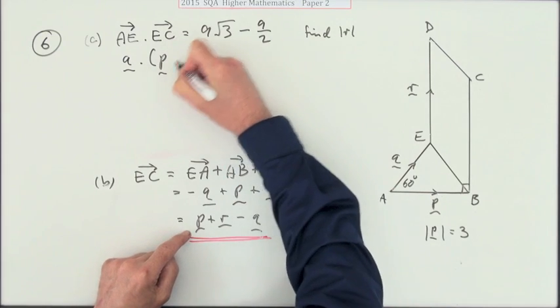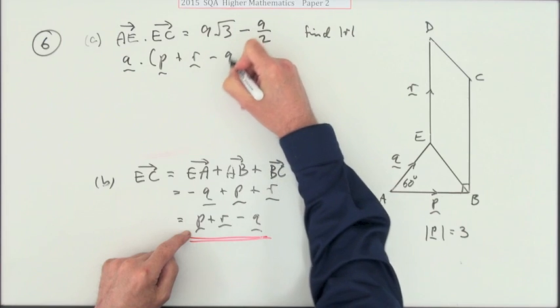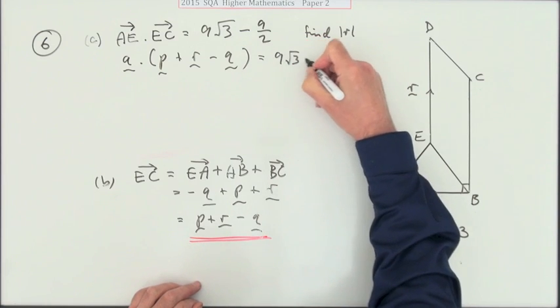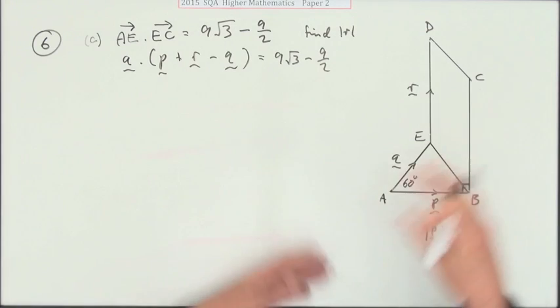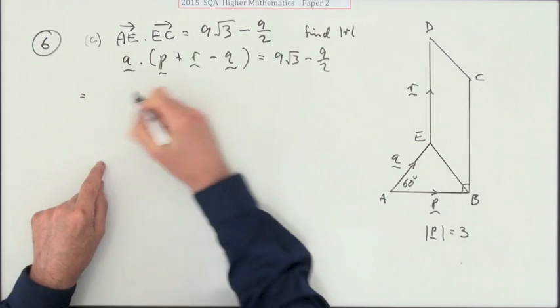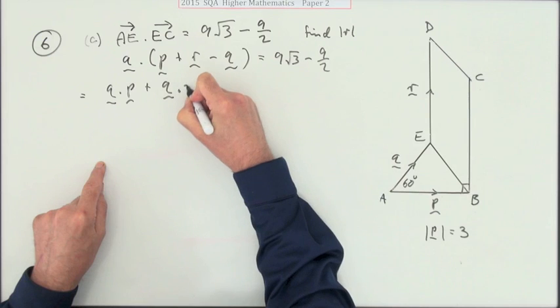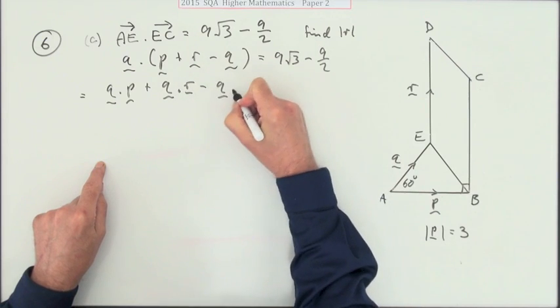And that's the thing that's going to equal 9 root 3 minus 9 upon 2. You've served your purpose, away you go. So we've got q dot p plus q dot r minus q dot q is equal to 9 root 3 minus 9 upon 2.